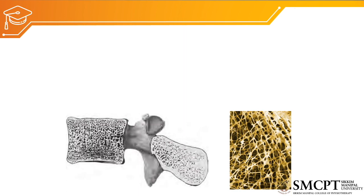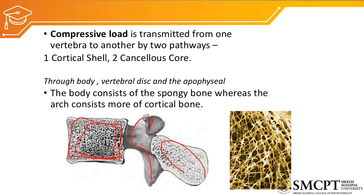In the trabecular system, the vertebral column has both spongy (cancellous) and cortical bone. The spongy bone is more prominent inside the vertebral body and spine, while the cortical bone is in the vertebral arches and laminae. This system reduces the weight of the body and resists compressive, distractive, and torque loading. Compressive loading is transmitted from one vertebra to another by two pathways: the cortical shell and the cancellous core.